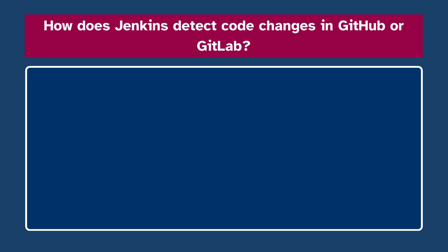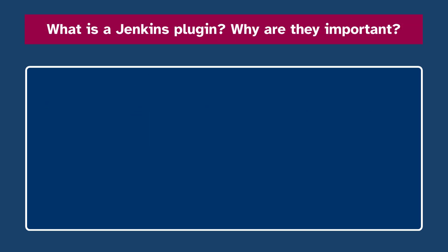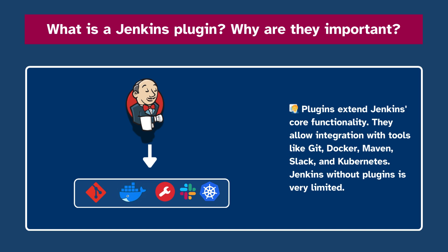Number eight: How does Jenkins detect code changes in GitHub or GitLab? Jenkins can poll the SCM periodically, or more efficiently, it can receive webhooks from GitHub or GitLab, triggering jobs as soon as code is pushed. Number nine: What is a Jenkins plugin and why are they important? Plugins extend Jenkins' core functionality, allowing integration with tools like Git, Docker, Maven, Slack, and Kubernetes. Jenkins without plugins is very limited.